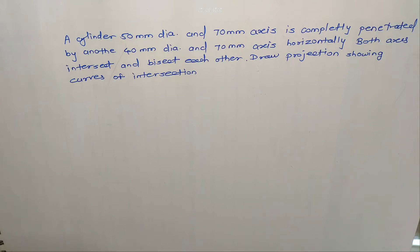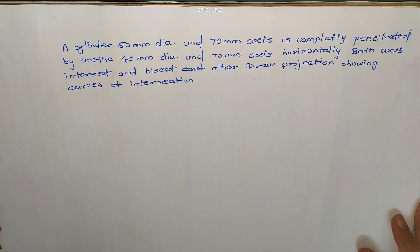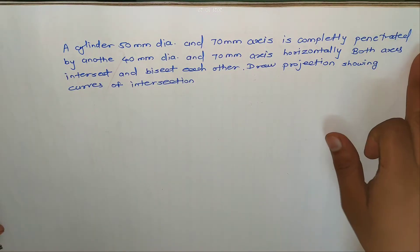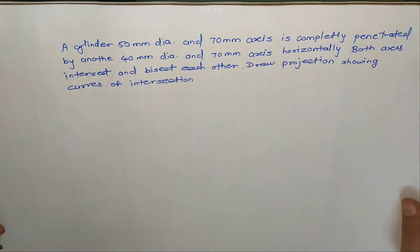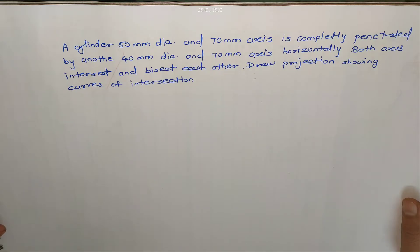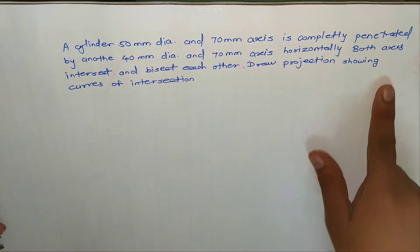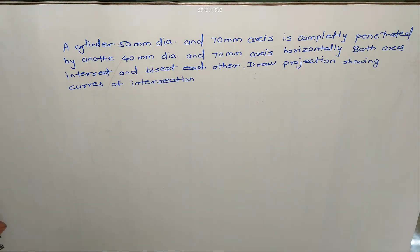Hi friends, in this video we see intersection of solids. Here we take one example. A cylinder of 50 mm diameter and 70 mm axis is completely penetrated, meaning intersected by another cylinder of 40 mm diameter and 70 mm axis horizontally. Both axes intersect and bisect each other. This is the condition. Draw projections showing curves of intersection. This is our question.